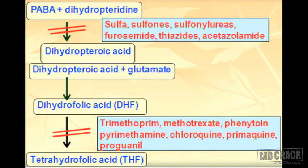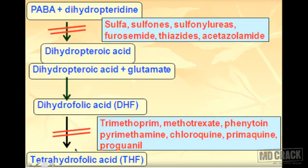The next slide shows a picture of how PABA gets converted to DHF, and DHF gets converted to THF. There are two reactions: PABA to dihydrofolic acid (DHF), and dihydrofolic acid to tetrahydrofolic acid (THF).